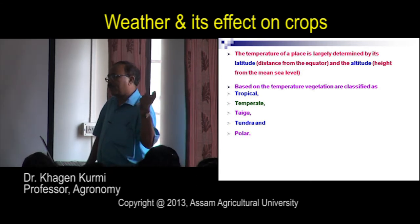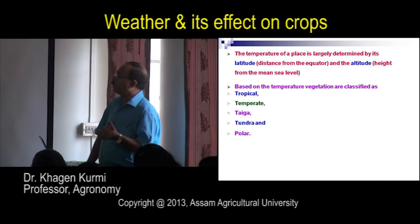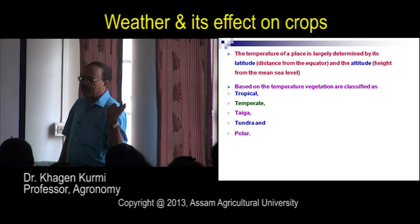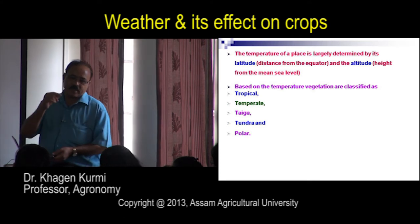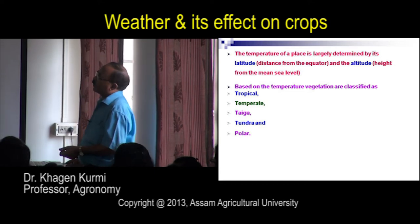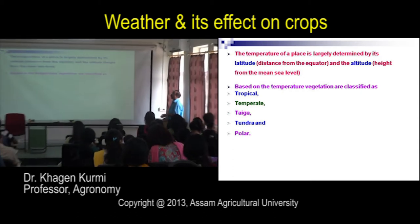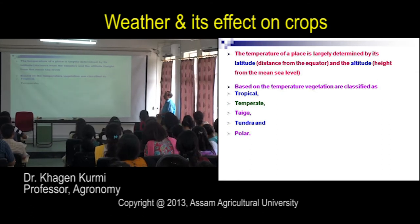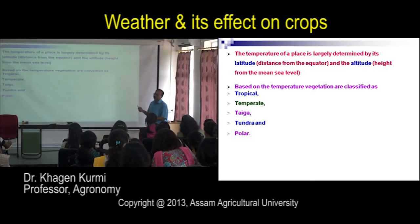Many low-temperature-loving crops can be easily grown in higher altitude areas like Shillong. CPRI has a substation at Upper Shillong, Meghalaya, because potato requires low temperature. Though at the same latitude, the higher altitude gives lower temperature. Based on temperature variation, we can classify climates into tropical, temperate, taiga, tundra, and polar.